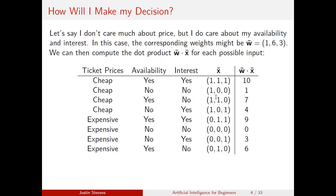Don't worry too much about the math if you haven't seen linear algebra — it's basically just a weighted sum. In the case that the tickets are cheap, I'm available, and I'm interested, I take the weighted sum 1 plus 6 plus 3 and get a final output of 10. In the case that only the tickets are cheap, I do 1 times 1 and get an output of 1. You can go through each of these and compute the dot product. So, how can I use this input to make my decision?